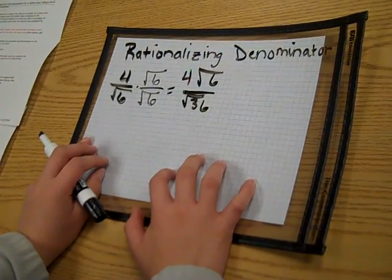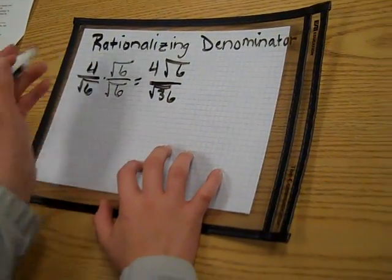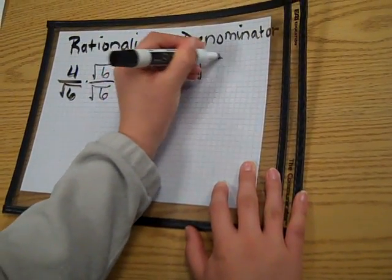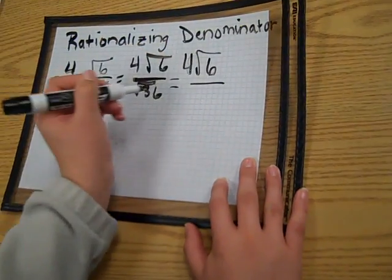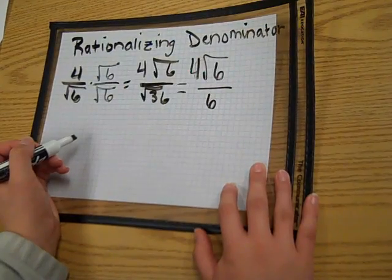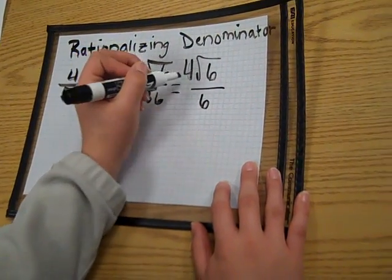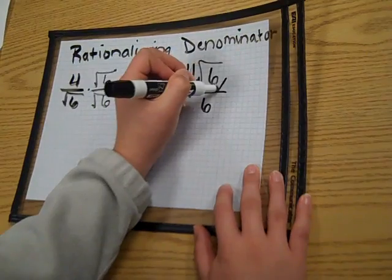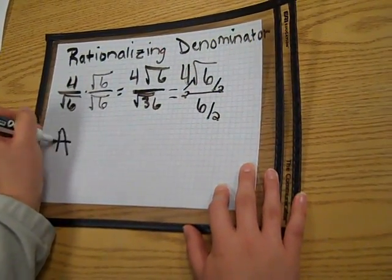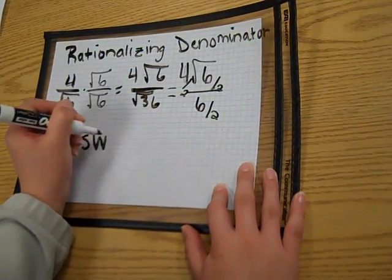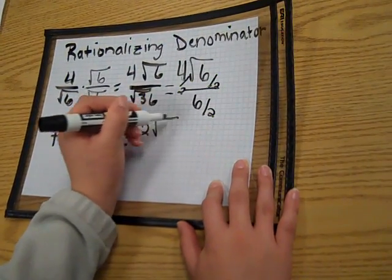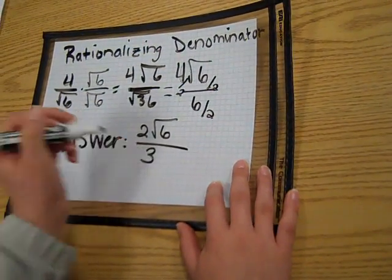And then I want to simplify the fraction, which is 4 times the square root of 6 over 6. Divide by the common factors, so you can divide the 4 by 2 and divide the 6 by 2, which gives you an answer of 2 times the square root of 6 over 3.